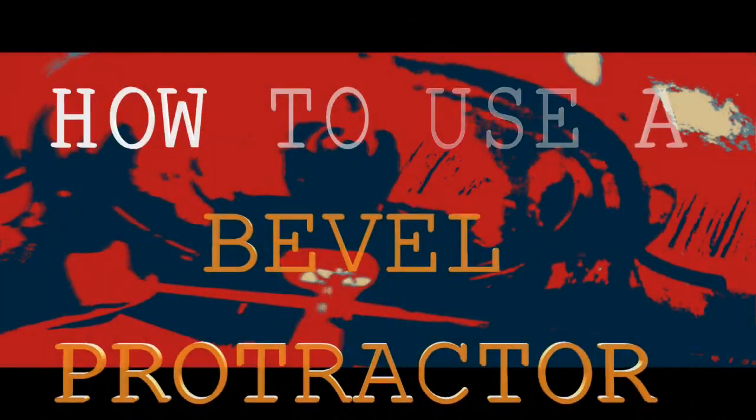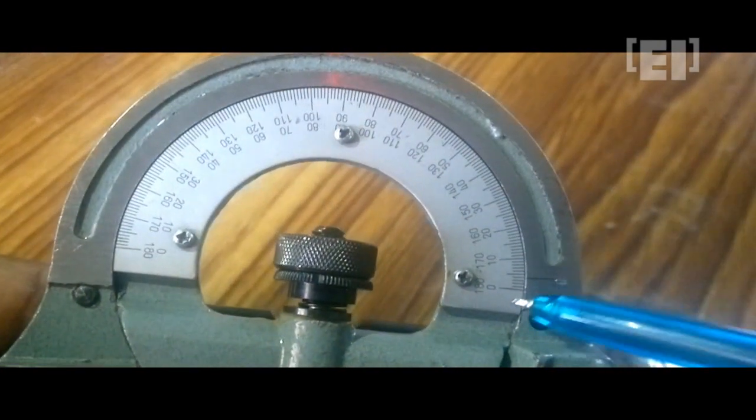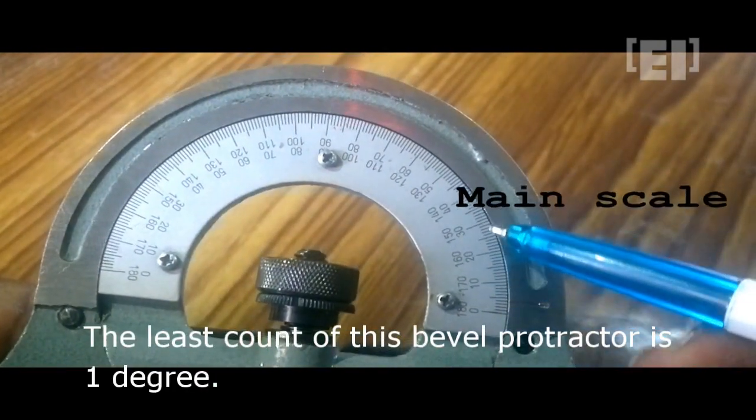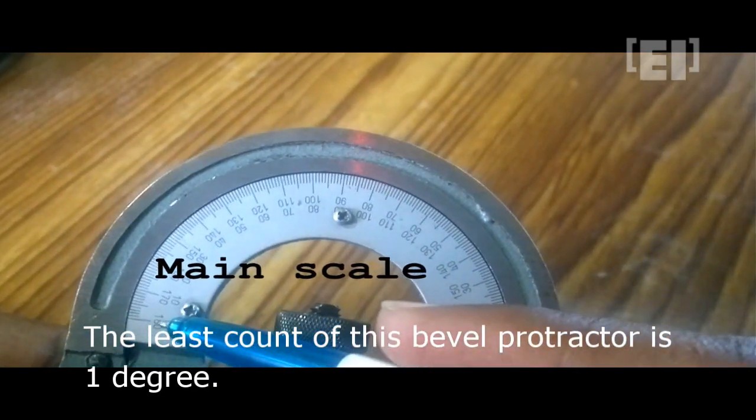In this tutorial, we'll teach you how to use a bevel protractor. On the front face, it has a main scale with 180 divisions, and the least count of this protractor is one degree. On the back, we can see